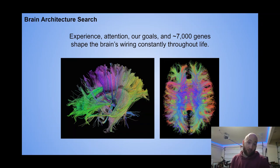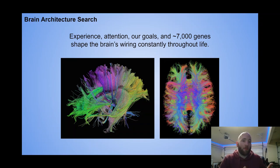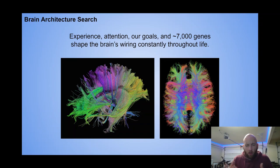We're going to talk about brain architecture search. I've used that nomenclature to contrast with neural architecture search in deep neural networks. I call it brain architecture search because: what does the real brain do for all these decisions that come up in neural architecture search all the time in deep neural networks? While reading David's book, I took notes of high-level concepts he mentioned that shape your brain's wiring diagram constantly throughout life.